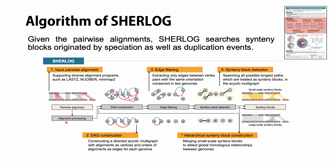This figure shows the algorithm of Sherlock. Sherlock consists of four main steps: alignment processing, directed acyclic graph construction, edge filtering, and syntenic block detection.